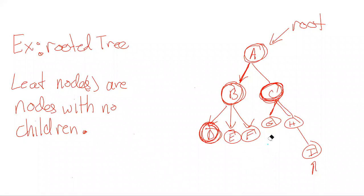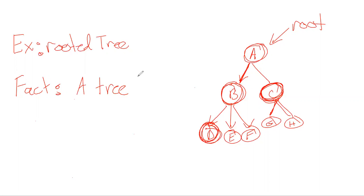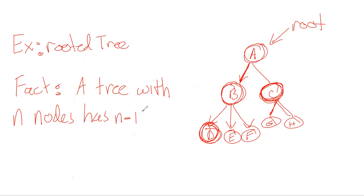We'll state a fact about trees: given our definition, if we have a tree with n nodes, then it must have n minus one edges. If there were any more edges, we would have a cycle, by definition, in which case it would no longer be a tree.